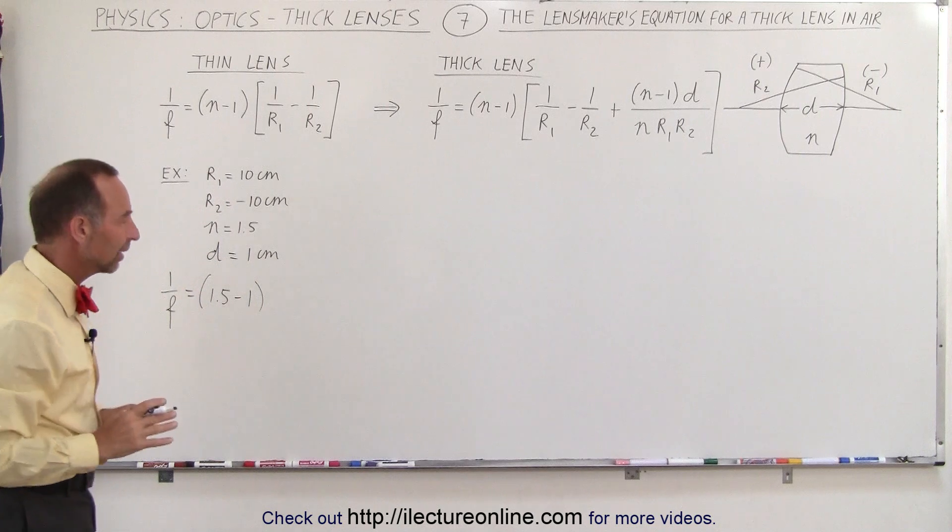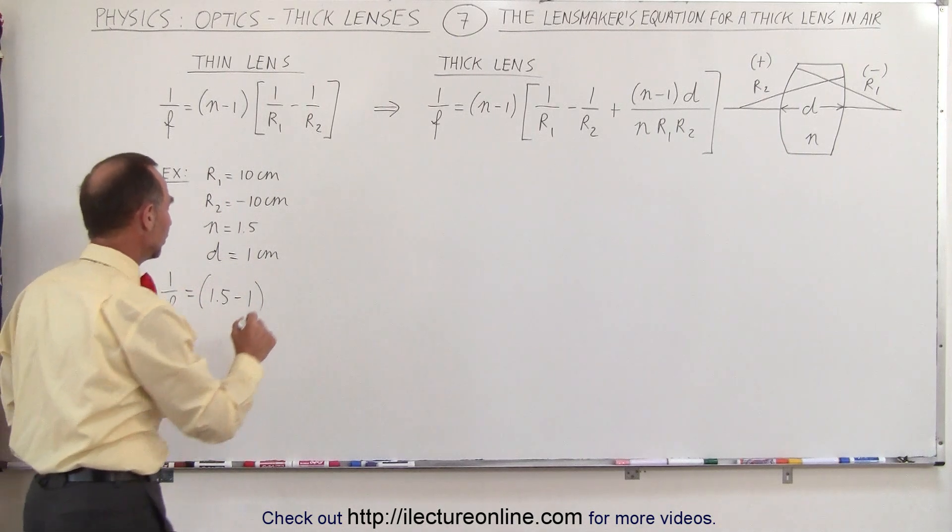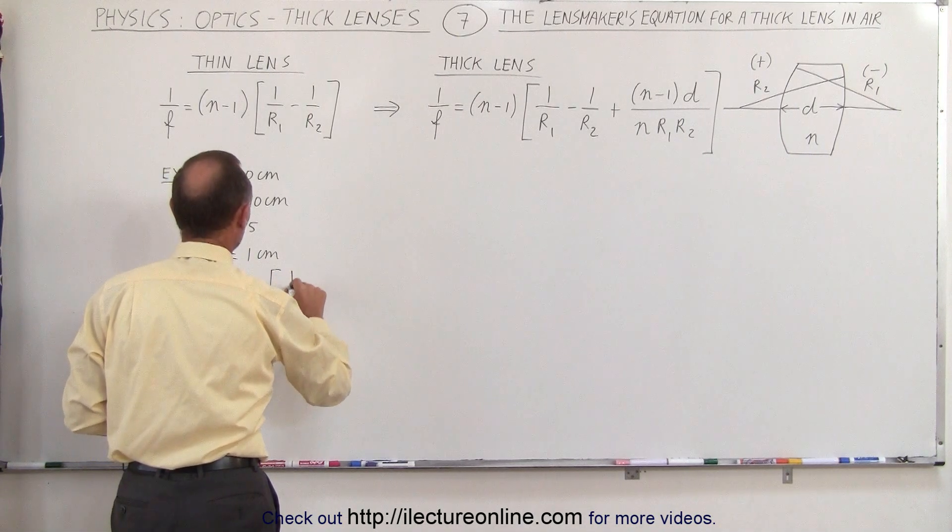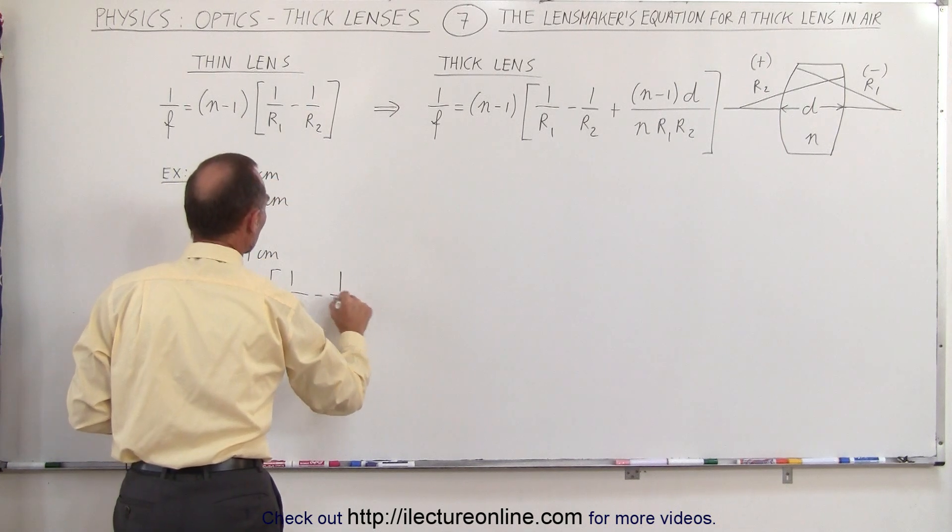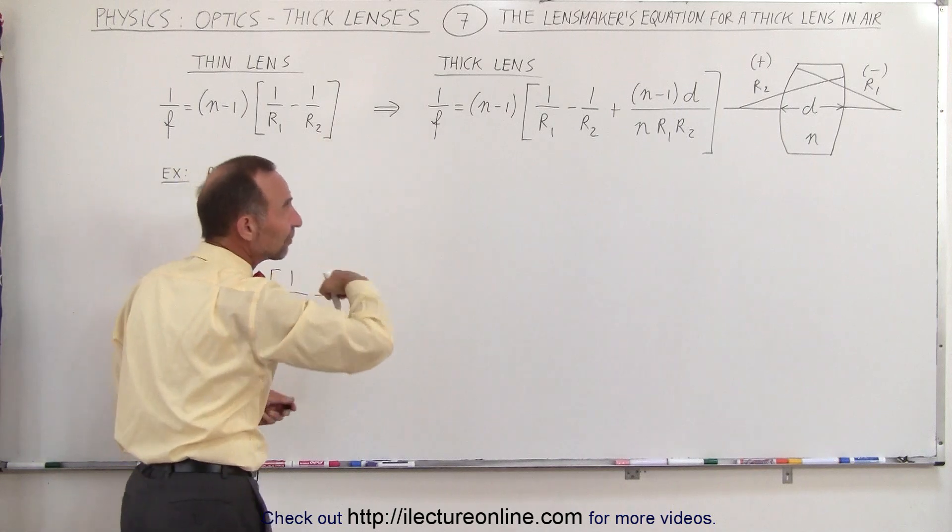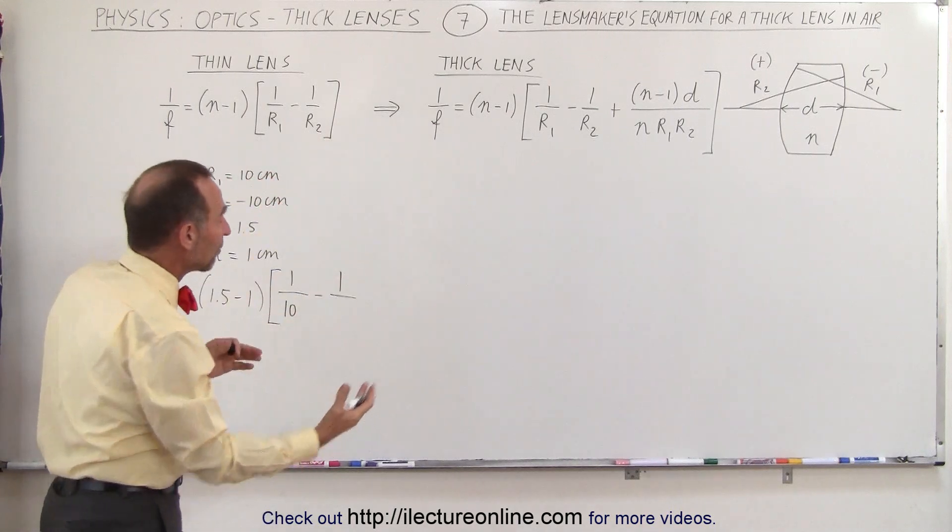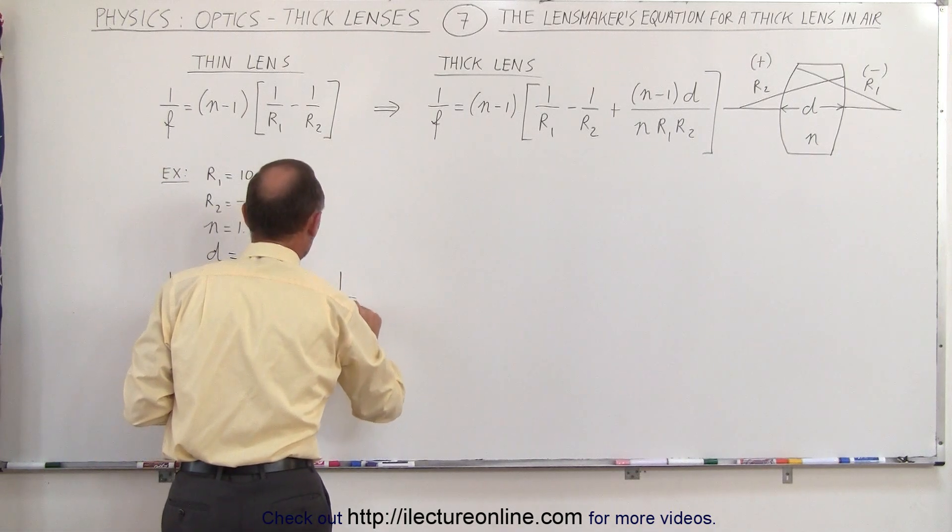Notice we use index of refraction 1.5 for the lens because it's made out of glass material, times 1 over R1 would be a positive 10 centimeters minus 1 over R2 would be a negative 10 centimeters because it bulges away from the left, so it's minus 10 right here.